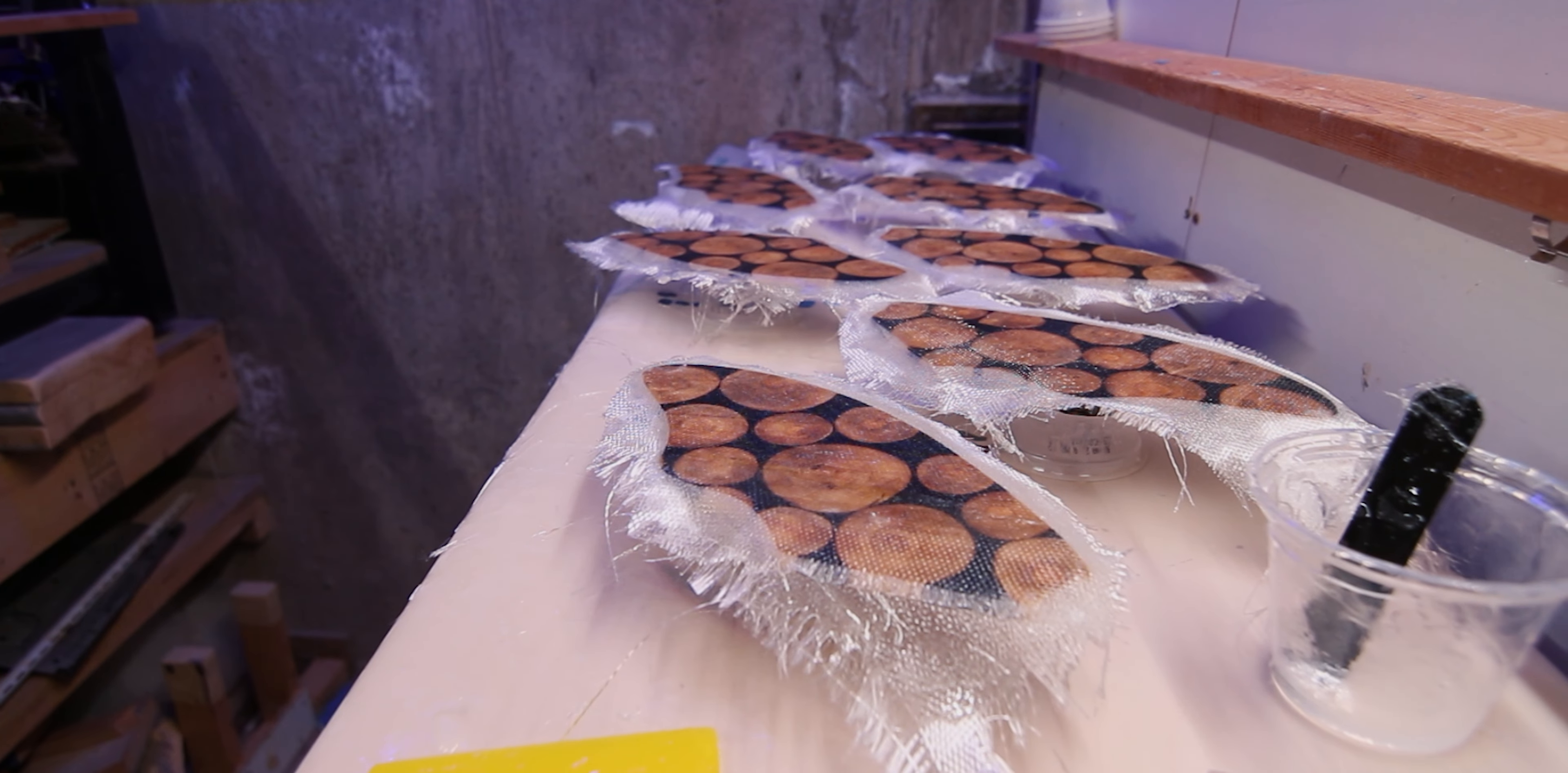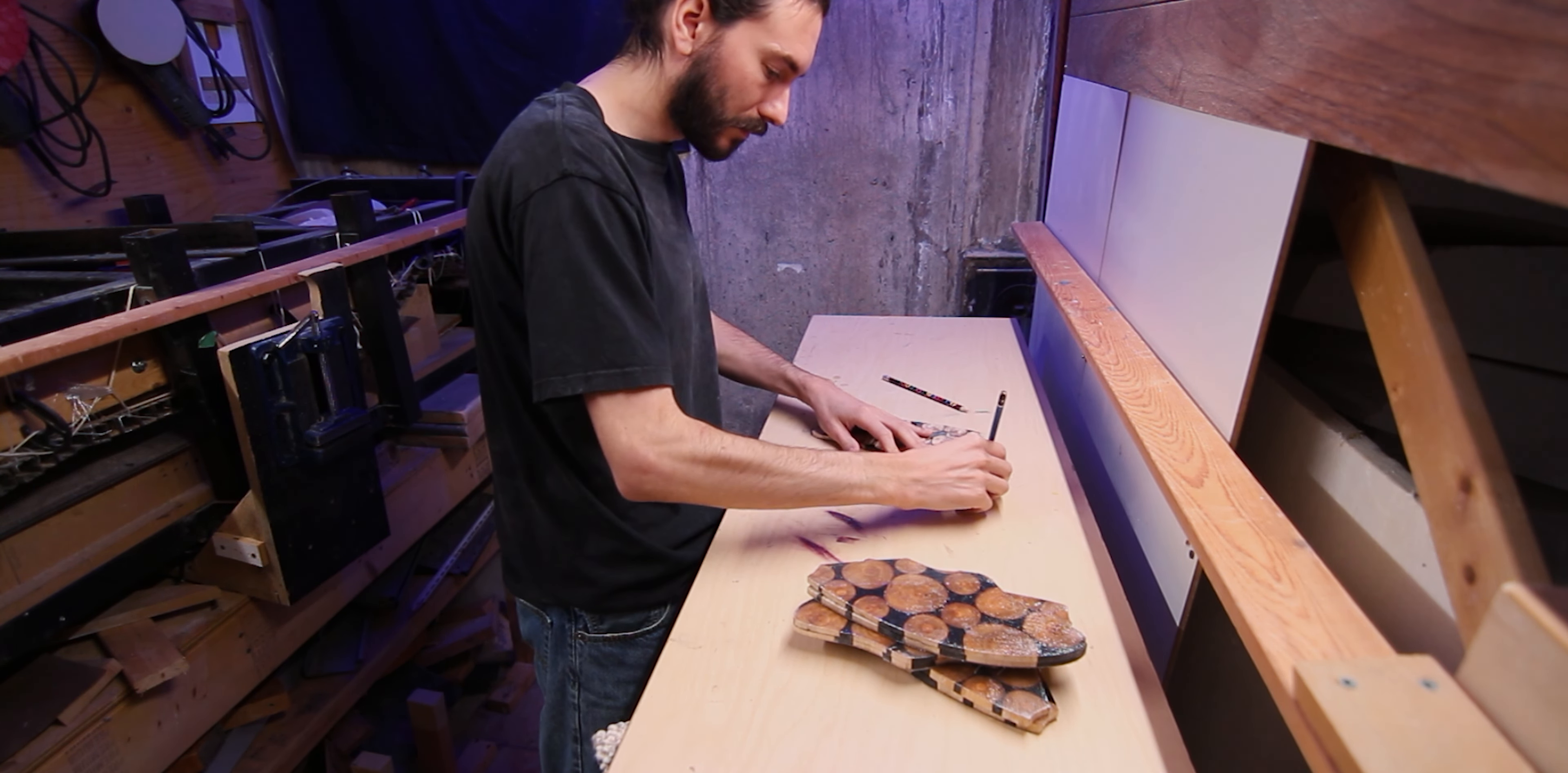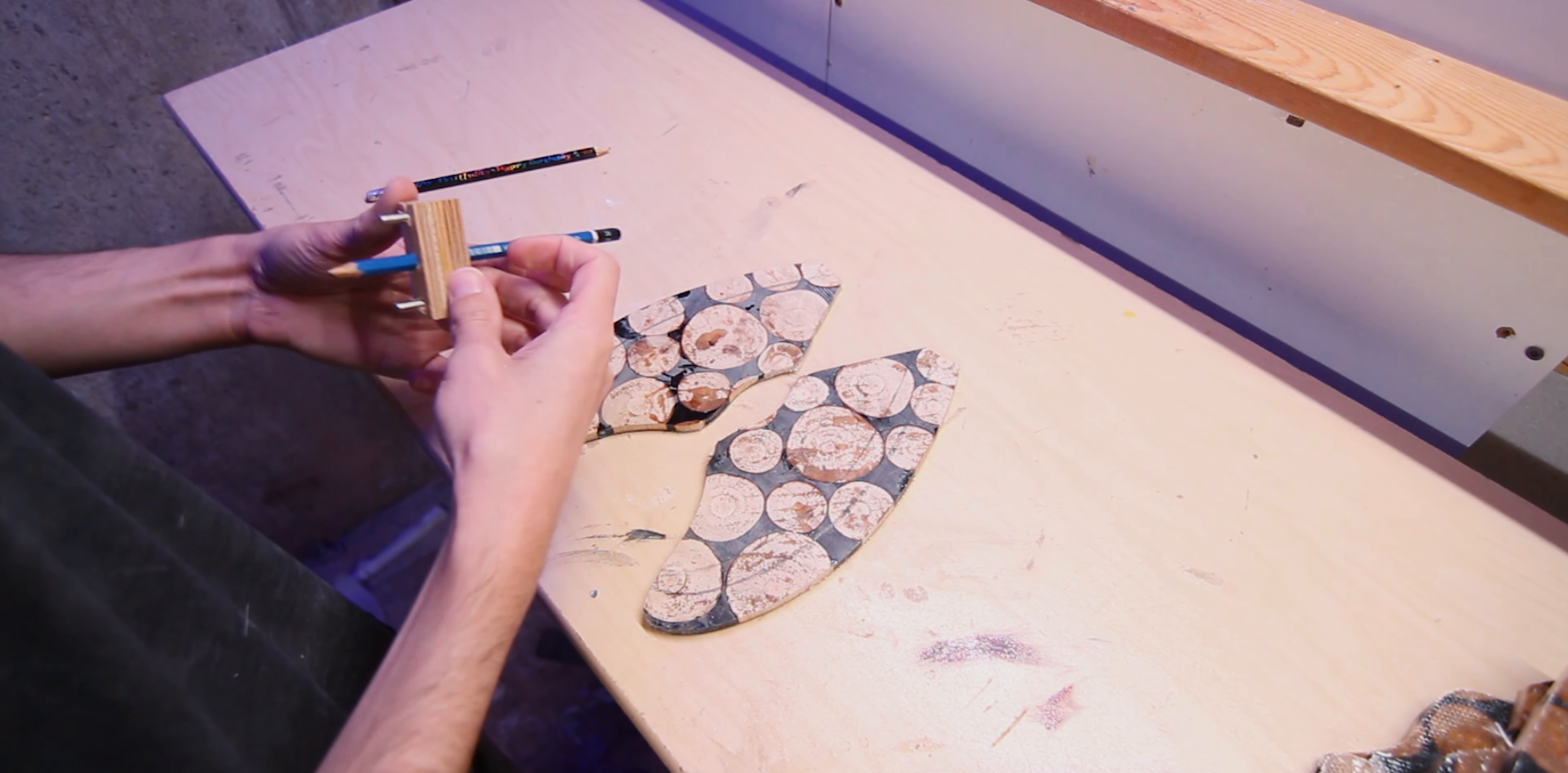For these fins, I don't want to glass them too heavy. I want them to have a little bit of flex, so I'm going to go with two layers of six ounce on each side. However, on the inside, I'm going to add another little six ounce patch that extends from the bottom of the fin up just past the tab of the fin. This will give this area some more strength as this is where I find fins typically break.